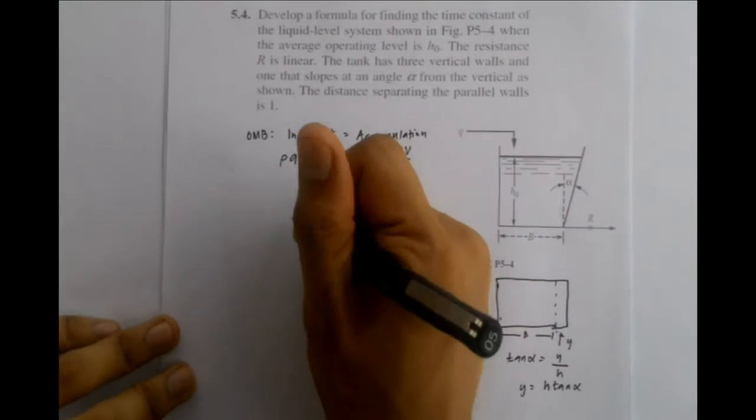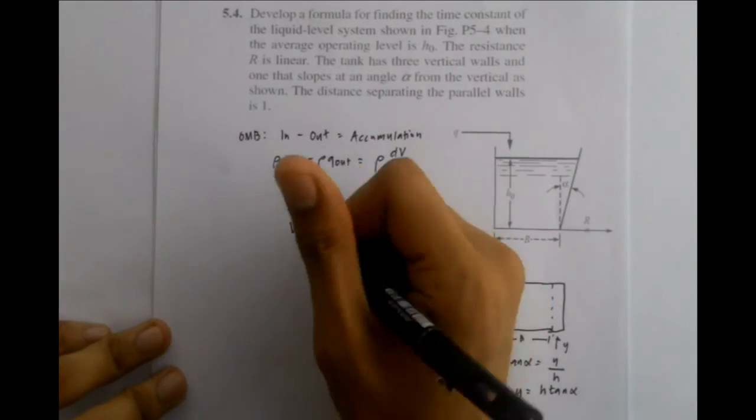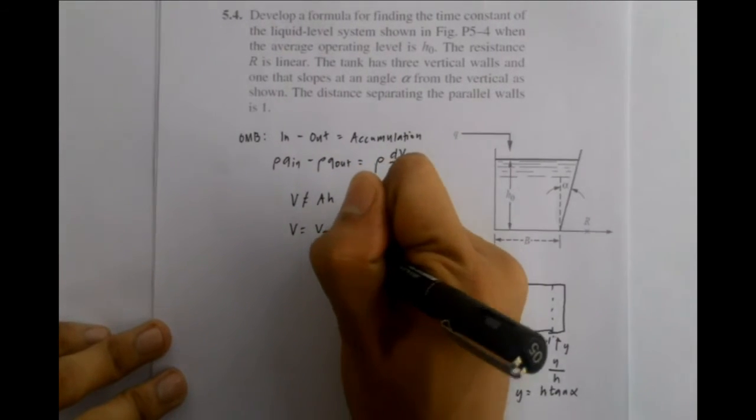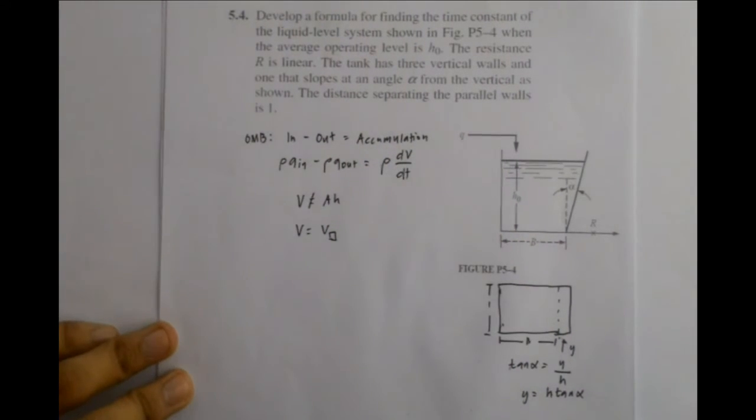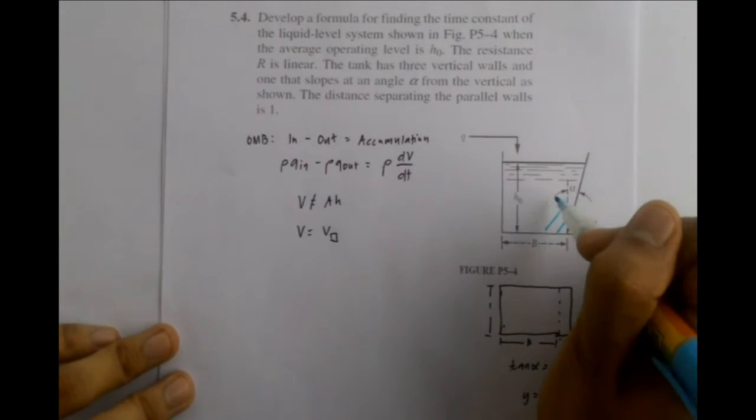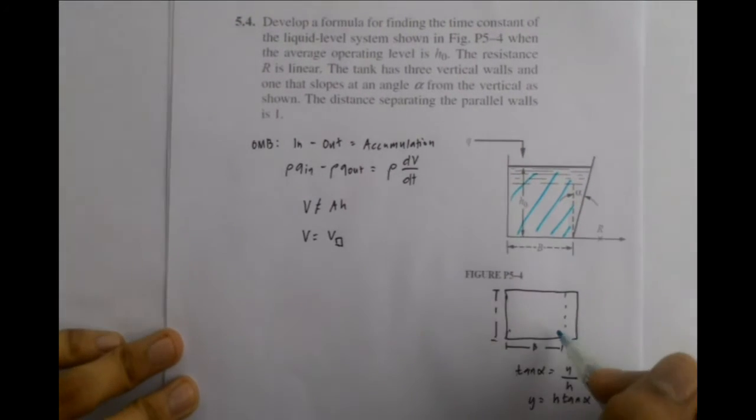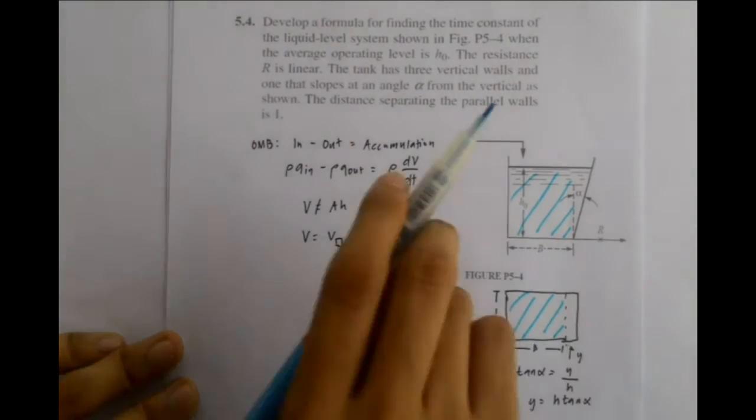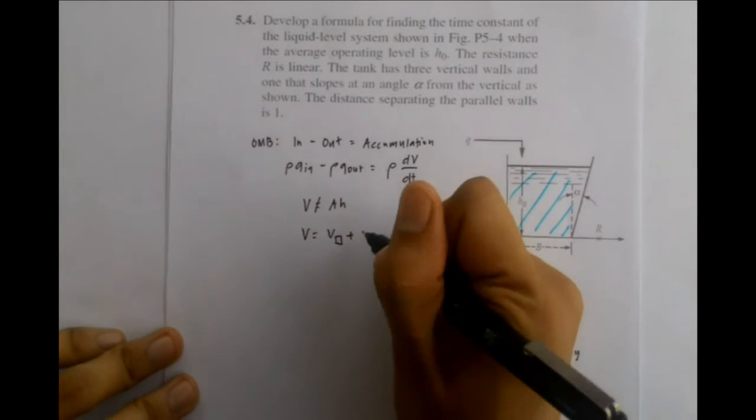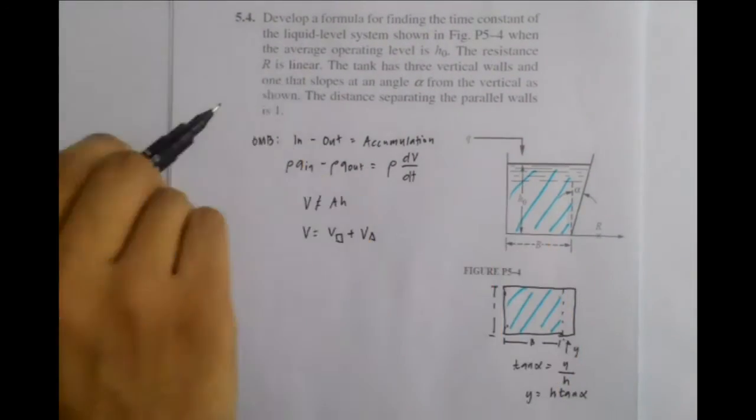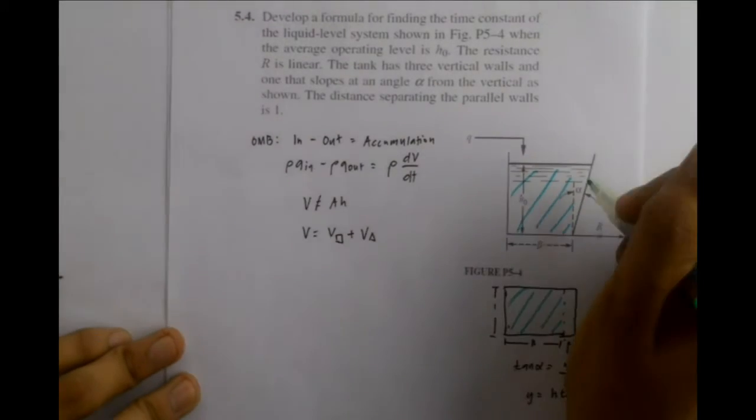Now, the volume of the tank would be the volume of the rectangular component, which in this case, this part, plus the volume of the triangular component, which in this case, this part.